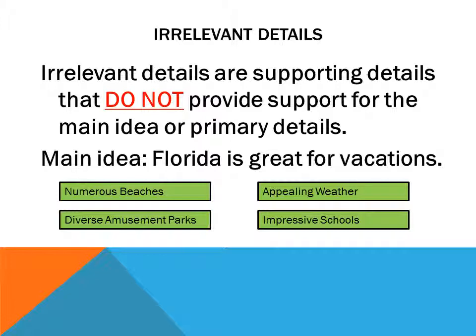Irrelevant details are supporting details that do not provide support for the main idea or primary details. Consider this example: Florida is great for vacations. Scan the supporting details and determine which one is not relevant to the main idea. The answer should be impressive schools — when vacationing, most people would not consider schools a determinant.